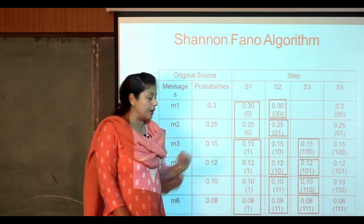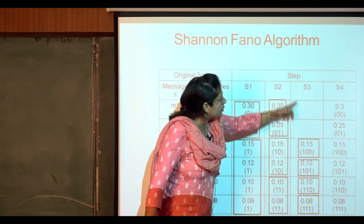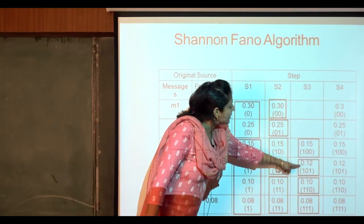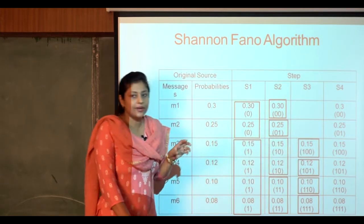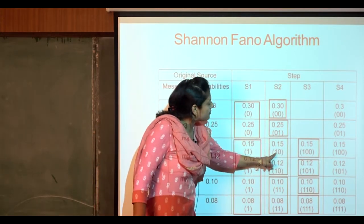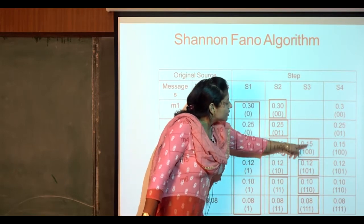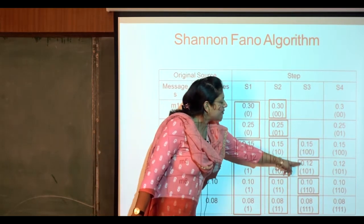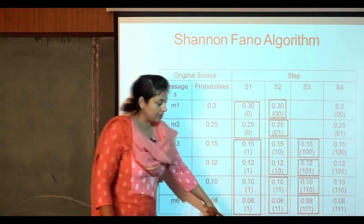Next we go to the third reduced state where 0.15 and 0.12 are segregated. Since 0.10 has been encoded as 1 0, we put another 0 in the third column, and for 0.12 we put 1 in the third column.